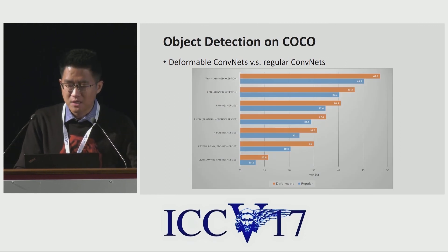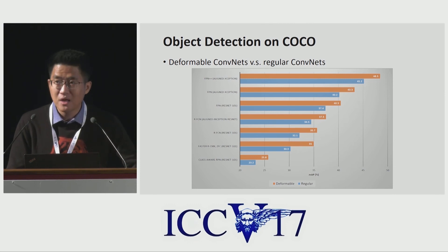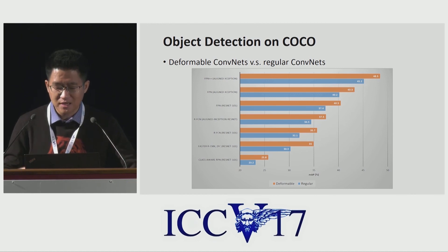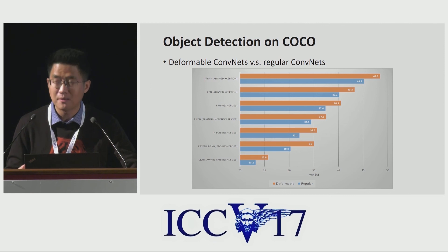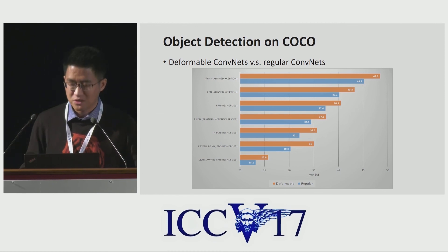Deformable convolutions are widely applicable for various algorithms and backbone network architectures. Here we show results on object detection on COCO. On class-aware RPN, Faster RCNN, and R-FCN baselines with ResNet-101, we get MAP score improvements of up to three to five points. On higher baselines such as FPN with ResNet-101, aligned Inception-ResNet, and aligned Xception, the gains also hold. Finally, by combining the latest techniques and various tricks, we obtain a very high baseline of 45.2 MAP. On top of it, by applying deformable convolutions, we can further increase the score by around three points to 48.5, at marginal parameter and computational overhead. This is the baseline for our COCO competition entry, and we will release more details at the COCO workshop.